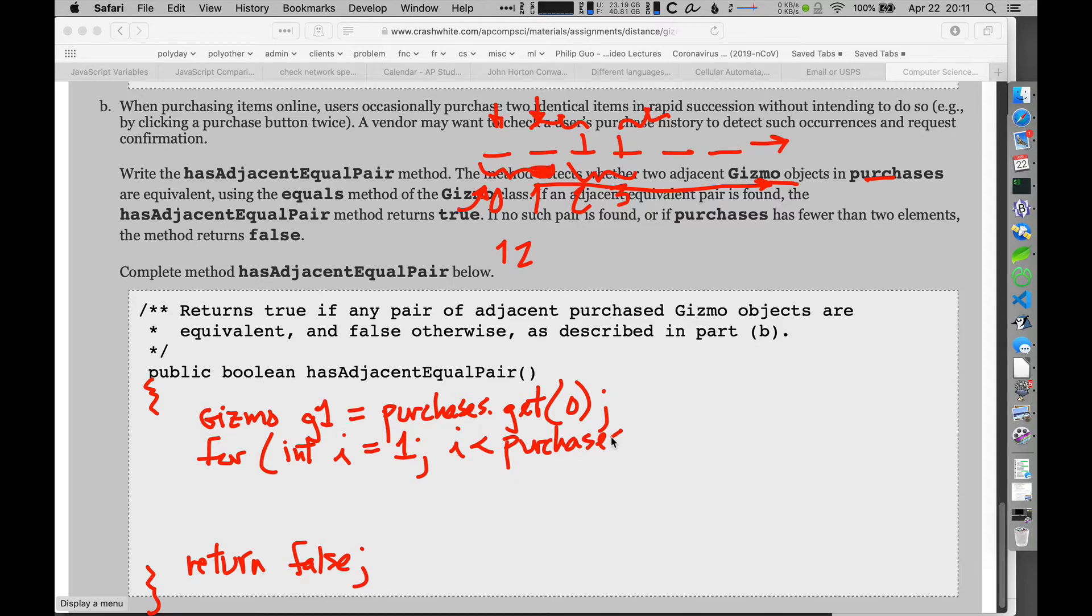And it's going to keep on going all the way to the end of the array, so that's going to be through the full length of purchases. But remember, for an array list, we call that size, the full size of the array list. I plus plus.